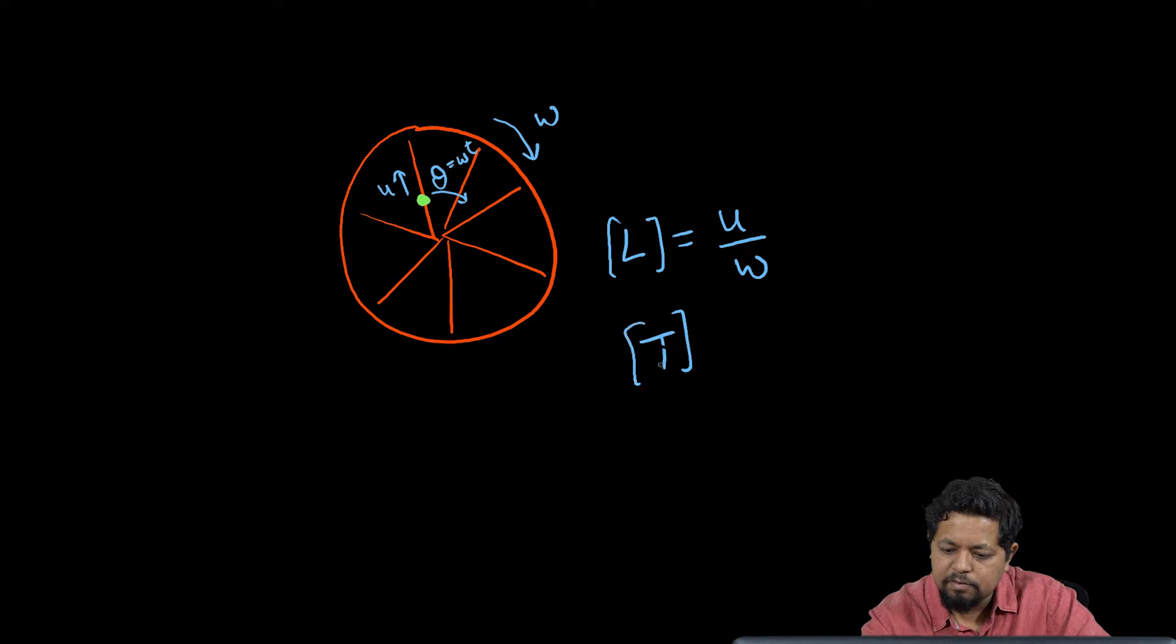For time we have 1 over omega. So we should go ahead and in order to non-dimensionalize, we should replace all quantities of dimensions of length such as x, y, and r by these dimensions.